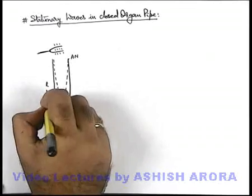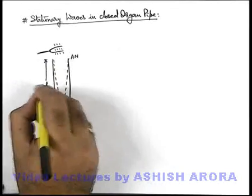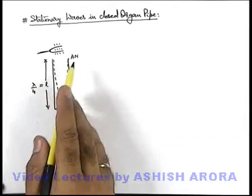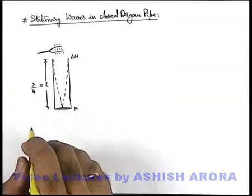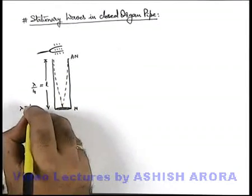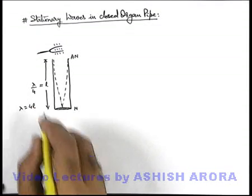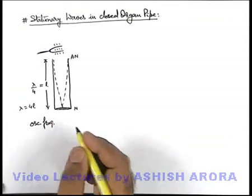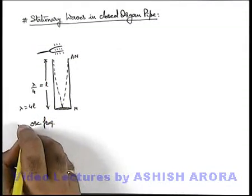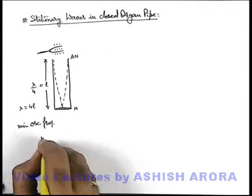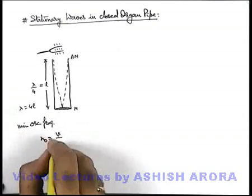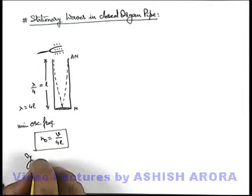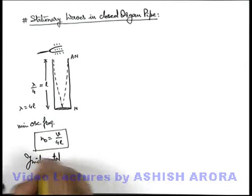When the length of this organ pipe is equal to lambda by 4, because the closest anti-node and node are separated by lambda by 4. So in this situation, the wavelength must be 4 times the length of the organ pipe. If we find the oscillation frequency — more precisely, if the wavelength is maximum this is the minimum oscillation frequency — it is v by lambda, and lambda can be written as 4L. This we can also term as the fundamental frequency of oscillation.